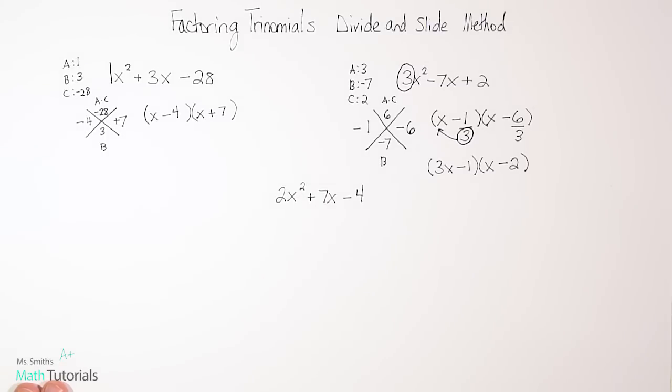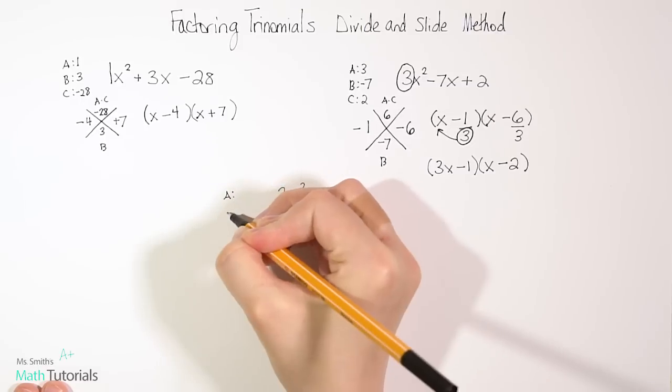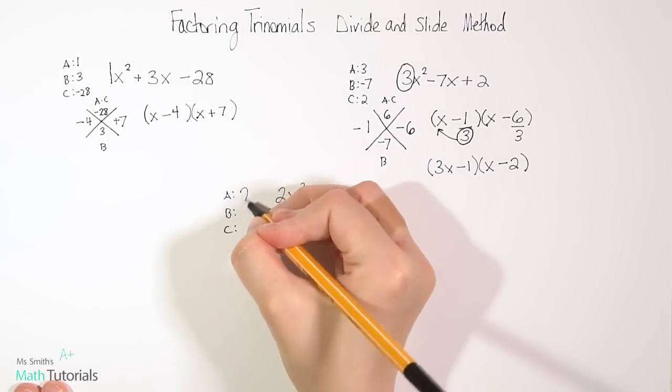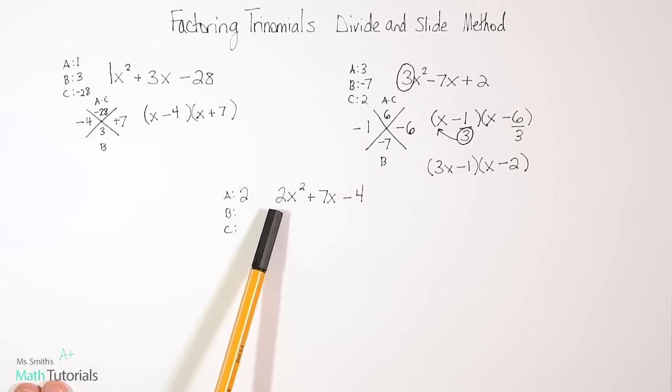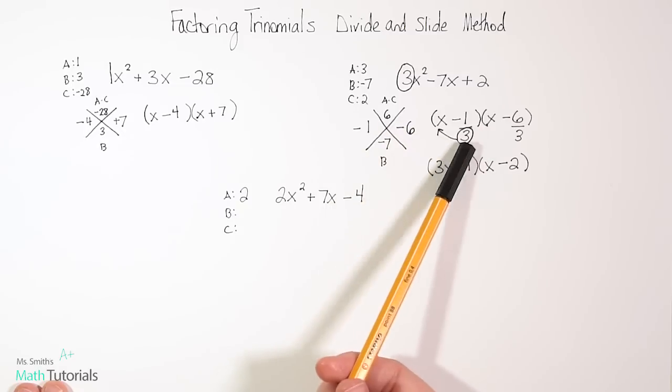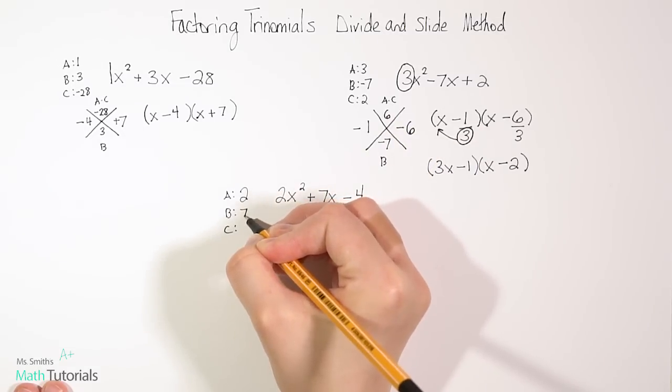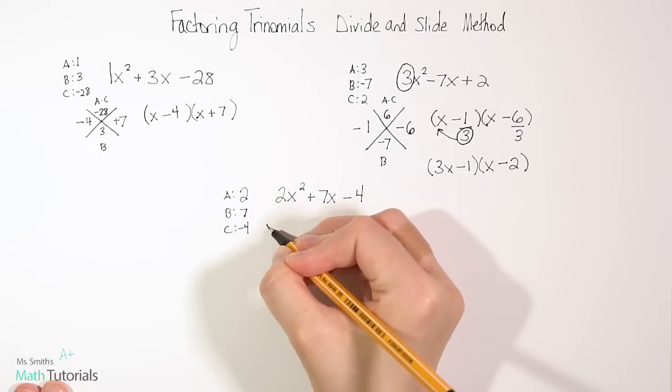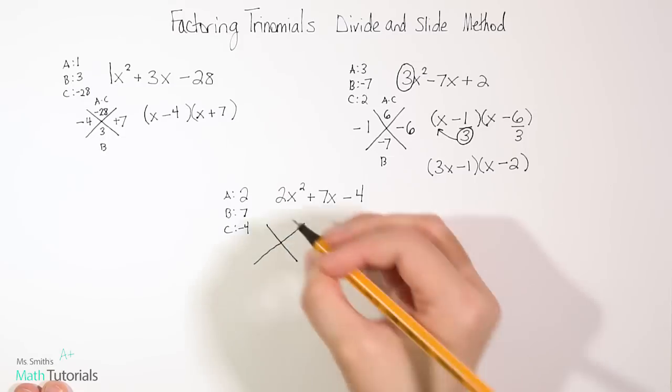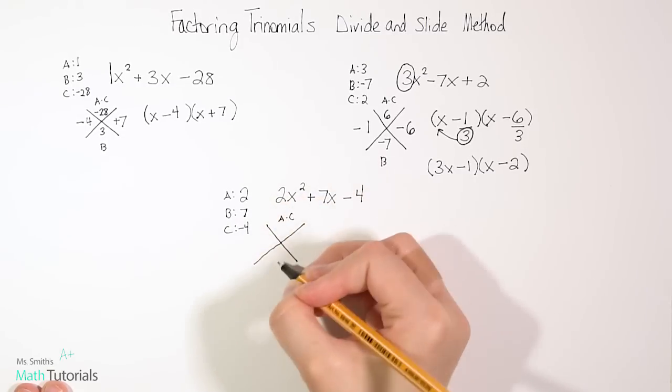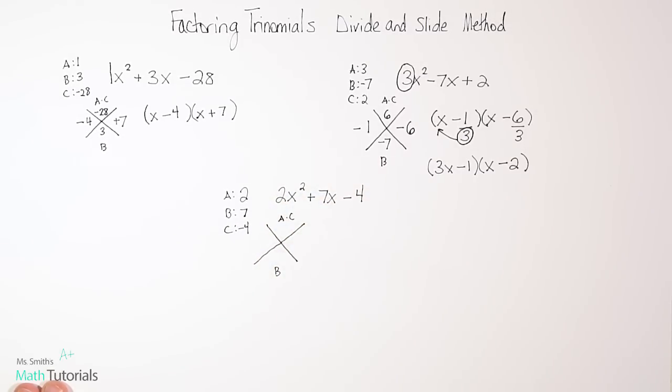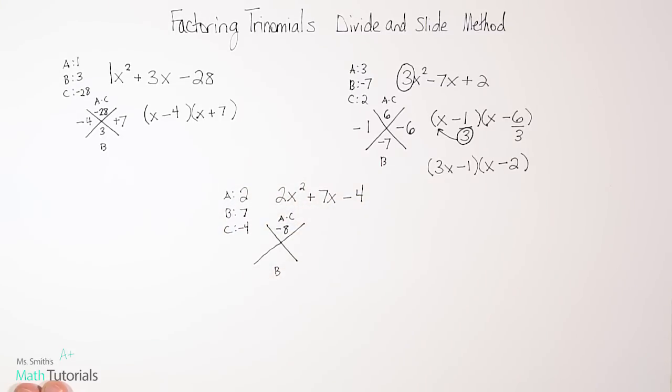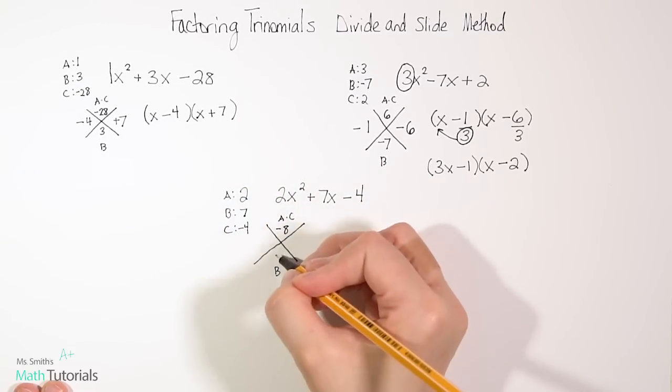Let's do one more together. Let's label our a, our b, and our c. So our a is going to be 2. Notice a is not 1, which means we're going to have to do this little circle and divide. Our b is going to be a positive 7, and our c is a negative 4. Let's go ahead and build our X. So our a times c and our b in the bottom. Now a times c, 2 times negative 4 is a negative 8. And our b is 7.